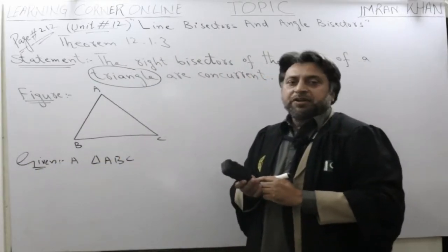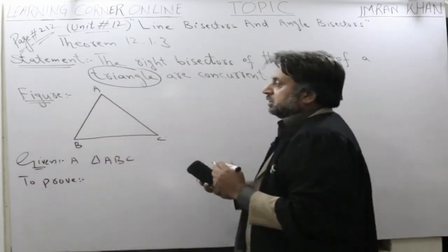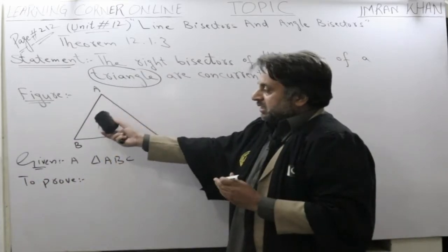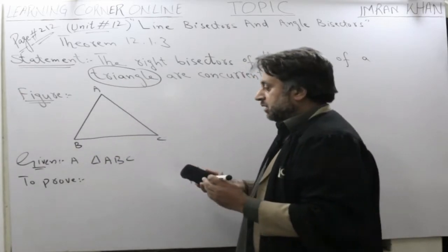And our fourth element of a theorem is what? To prove. We need to prove that the right bisector of AB, BC and AC are what? Concurrent.